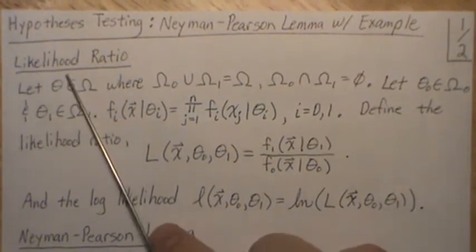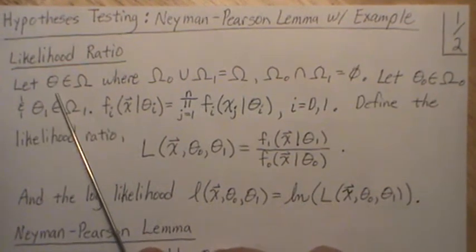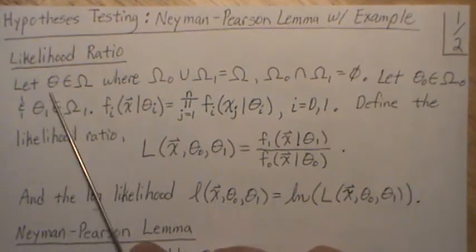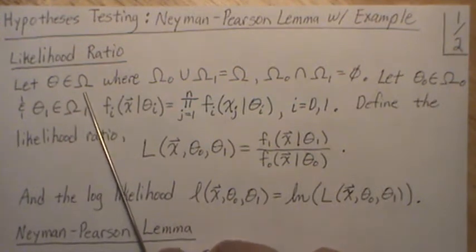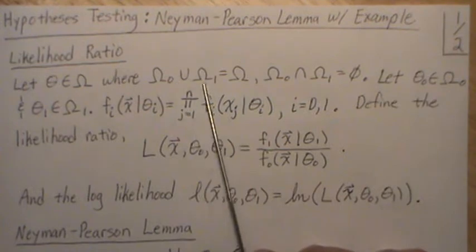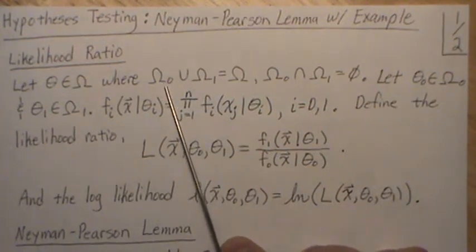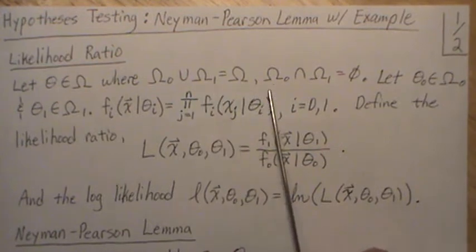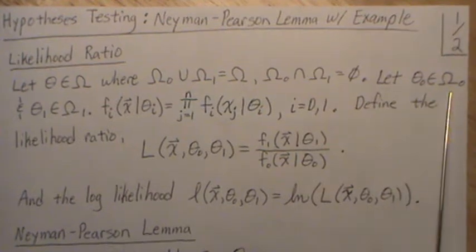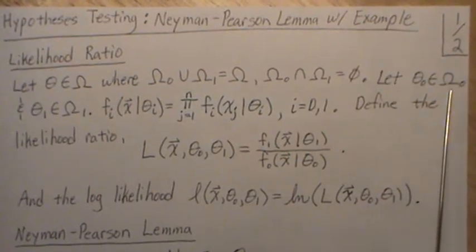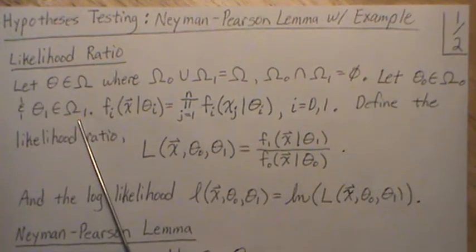But first I want to introduce something called the likelihood ratio in this hypothesis testing setting. So we have some parameter that we want to learn about and it's in the parameter space omega. Omega can be partitioned into two disjoint sets, omega 0 and omega 1, and pick a value in the omega 0 and pick a value that lives in the omega 1 space.